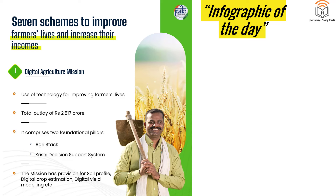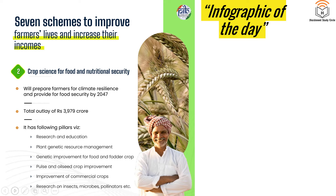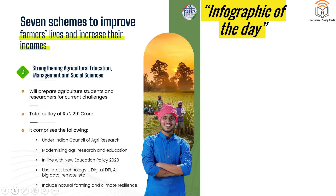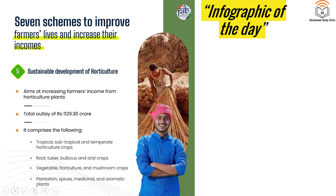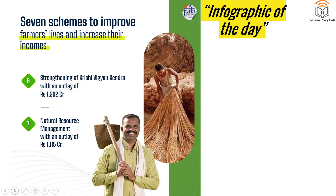This brings the session to an end, but I have an important infographic for you. The government recently shared seven schemes to improve farmers' lives and increase their income. These are: the Digital Agriculture Mission, Crop Science for Food and Nutritional Security, Agriculture Education Management and Social Sciences, Sustainable Livestock Health, Sustainable Development of Horticulture, Strengthening Krishi Vigyan Kendras, and Natural Resource Management. You can quote all of these very easily in the mains examination when there's a question about government initiatives on agriculture. I hope you learned something new — hit the like button, and I'll see you tomorrow. Take care!